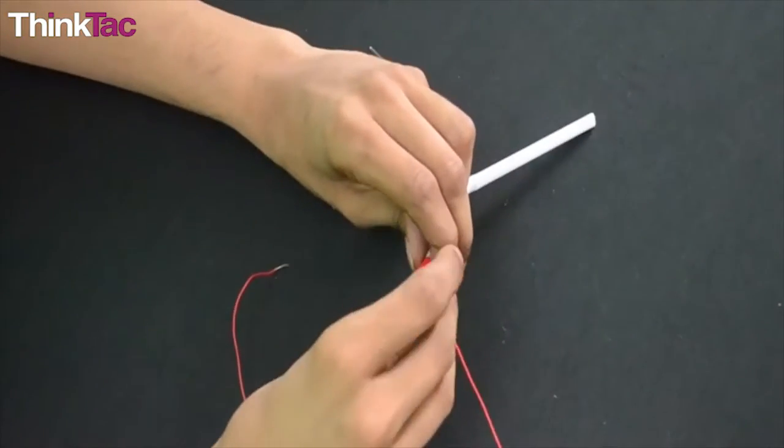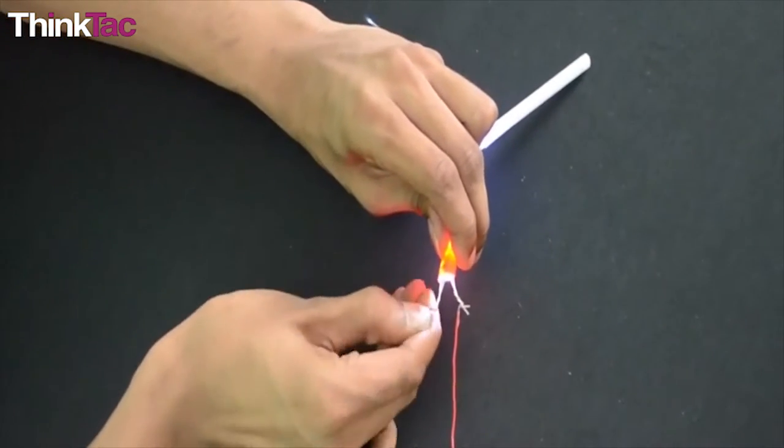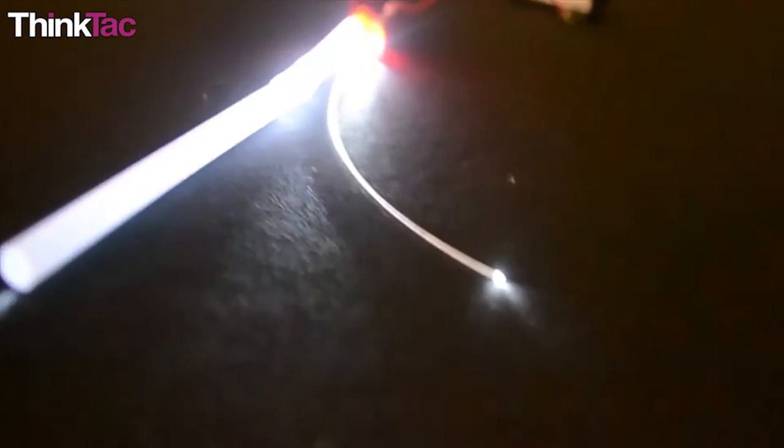Through this activity, we have explored the working of an optical fiber. We have compared how light travels differently through a simple straw compared to how it travels down an optical fiber.